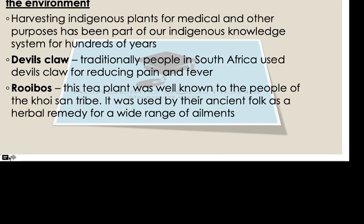Then we have Rooibos, which is a tea plant. It was popular in the Khoisan tribe, as they were using it as a herbal remedy for a range of ailments. So they used it for a lot of things.